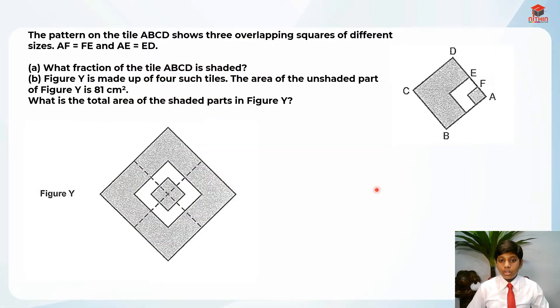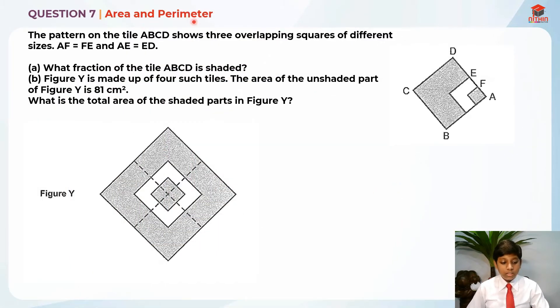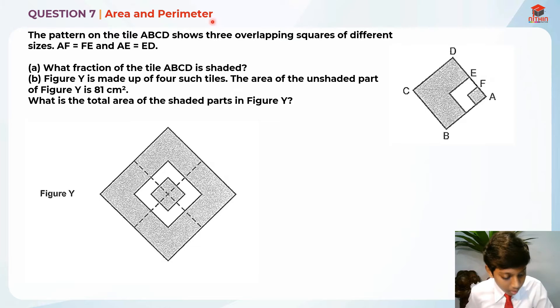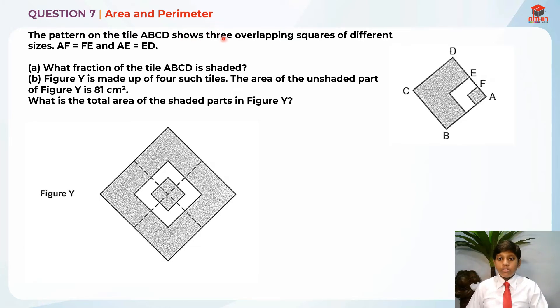This over here is question 7 and this question is testing us on area and perimeter. We are going to do part A first, so let's read part A first.